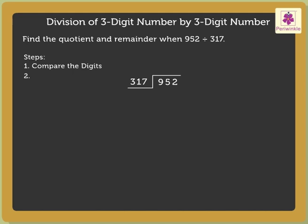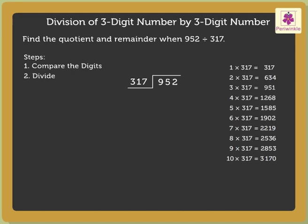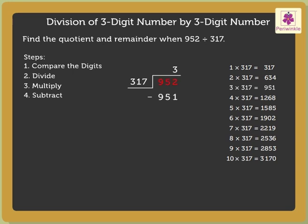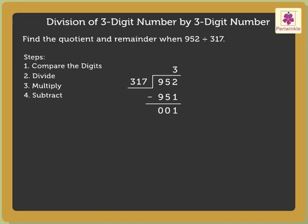Step 2 is doing the division. Now, we have to find a multiple of 317 which is equal to or less than and nearest to 952. The nearest multiple is 951. Step 3 is to multiply. As 317 into 3 is equal to 951, we write 3 in the quotient above 2. Step 4 is to subtract 951 from 952, which is equal to 1. As there are no digits to bring down, we have finished our division. Therefore, the quotient is 3 and the remainder is 1.